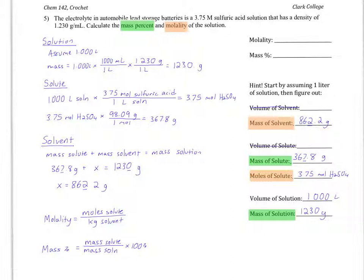We now have all the information we need to calculate molality and mass percent. For molality, I'll divide the moles of solute by the kilograms of solvent. I'll have to do a conversion from grams into kilograms first. 3.75 moles of sulfuric acid divided by 0.8622 kilograms of water gives me a molality of 4.349 molal. Rounding to the appropriate number of sig figs, I have a final molality of 4.35 molal.